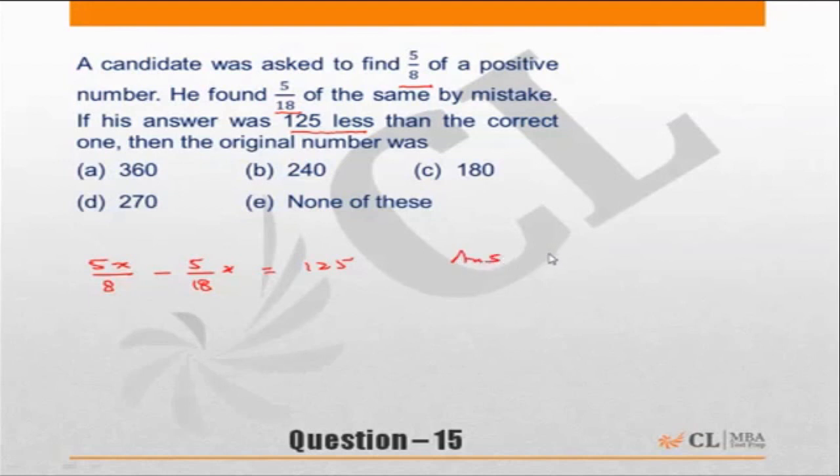Because we are finding 5/8 of x, so it should be a multiple of 8. We are finding 5/18 of x, so again x should be a multiple of 18. So if the number has to be multiple of 8 and 18, the choice which is not a multiple of 8 and 18 has to be incorrect.